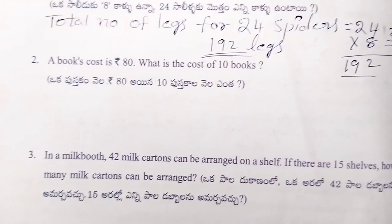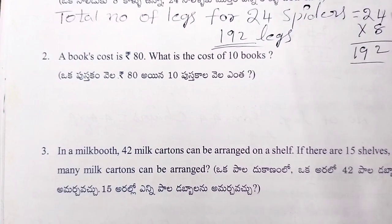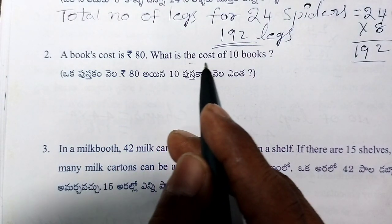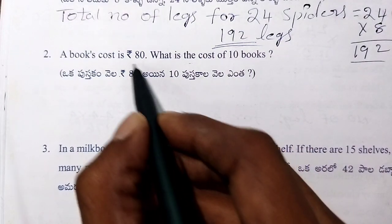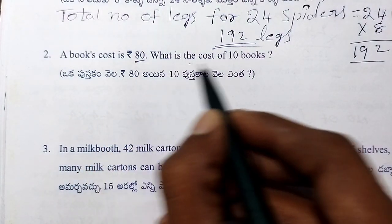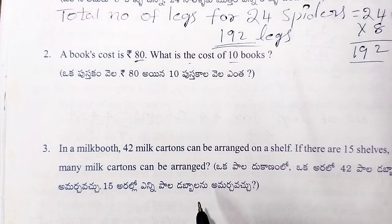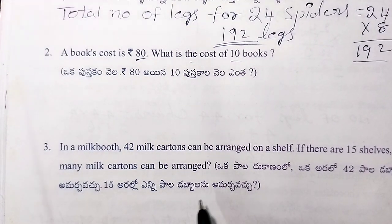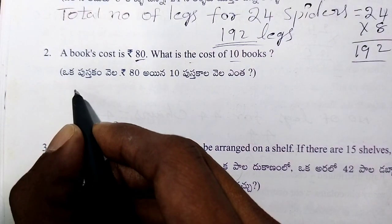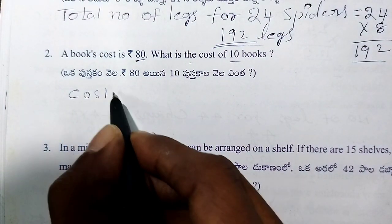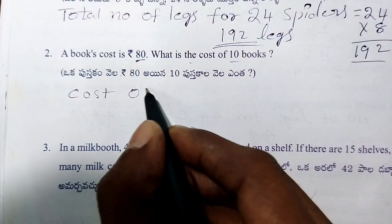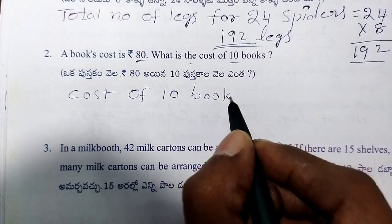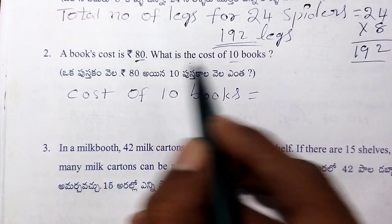Next, a book costs 80 rupees. What is the cost of 10 books? It is 80 rupees. So, the cost of 10 books is equal to 80 into 10.